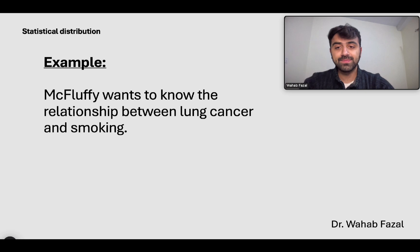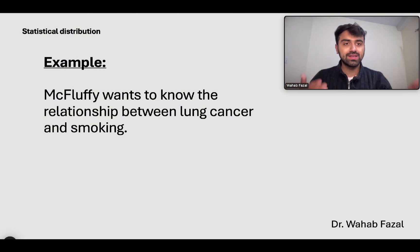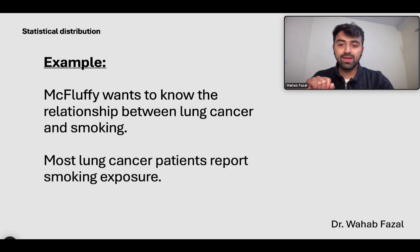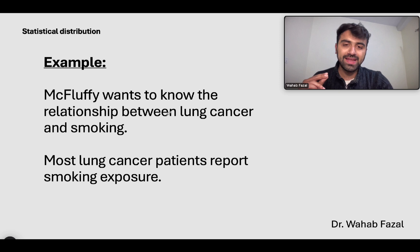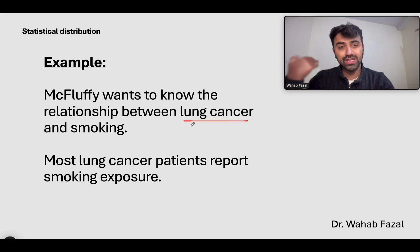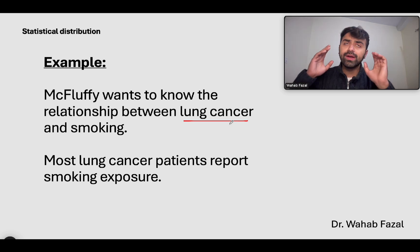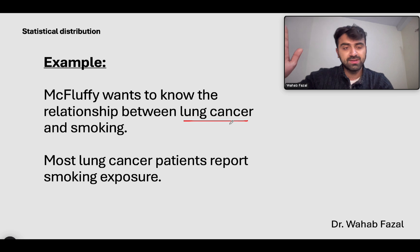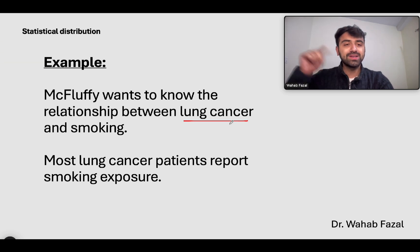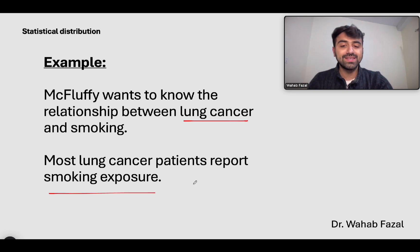Let's take another example to understand information bias. McFluffy wants to know the relationship between lung cancer and smoking. He goes up to lung cancer patients and asks them about their smoking, and does the same for people not affected by lung cancer. Most lung cancer patients report smoking exposure. The problem is that if somebody has developed a negative outcome like lung cancer and you ask them about a harmful exposure, the odds of them remembering that exposure are very high. A lung cancer patient might recall smoking even one cigarette 20 years ago, whereas people without the disease are less likely to remember the same. That's the problem with this study — this is a specific type of information bias called recall bias.